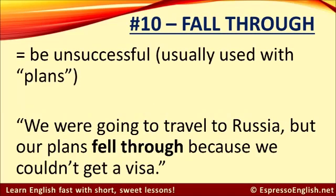And number ten: fall through. Fall through means to be unsuccessful. We usually use this phrasal verb with plans. For example, we were going to travel to Russia, but our plans fell through because we couldn't get a visa. So, our plans fell through means our plans were unsuccessful and they had to be cancelled.